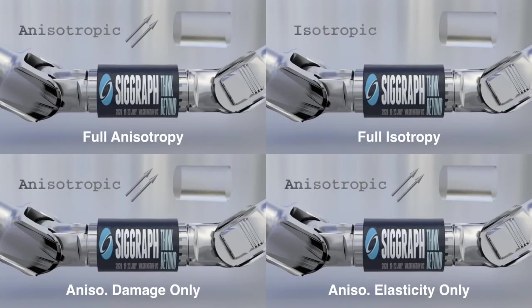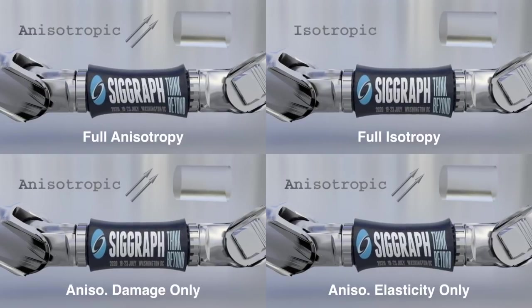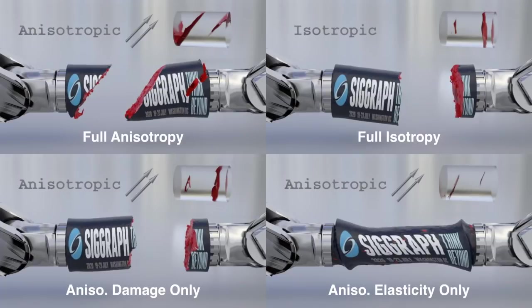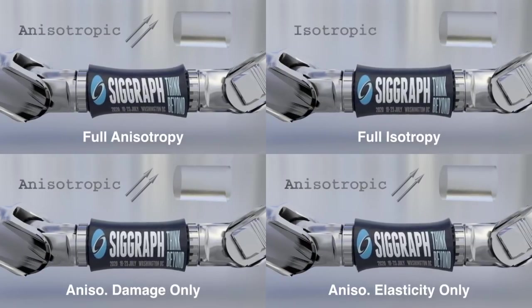To demonstrate the efficacy of pairing our methods together, we present four tube pulls. The top left tube is pulled with both anisotropic damage and anisotropic elasticity to demonstrate the successful pairing of our two methods together.